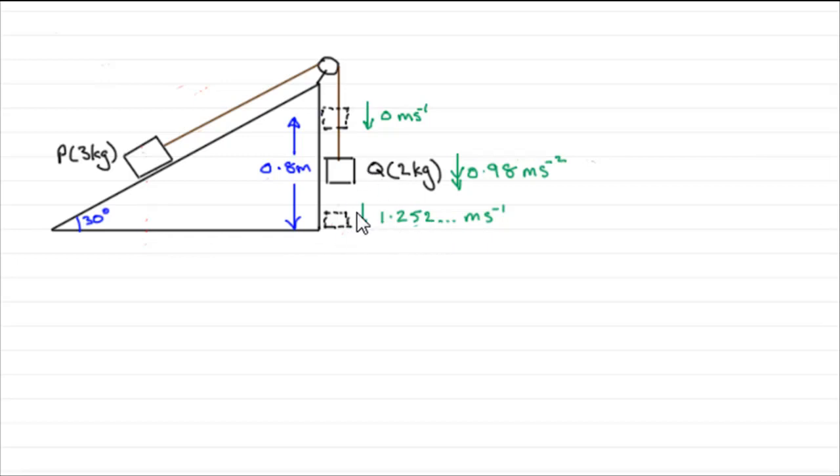So Q hits the ground at 1.252 meters per second. So as Q fell to the ground, P started life off down here. When it was here, P was moving, well it was at rest because Q was at the top here. And then when Q got to here, P was here, say. Now when Q hits the ground, P will be, say, here.